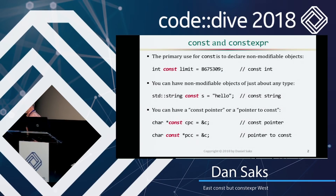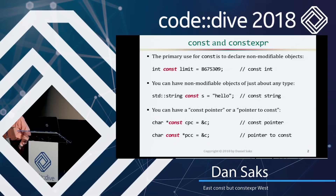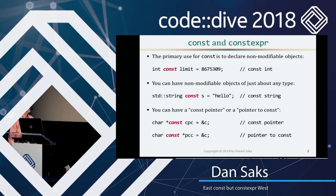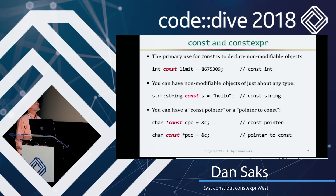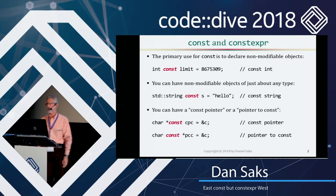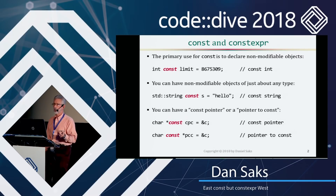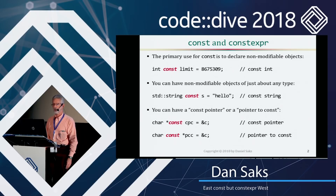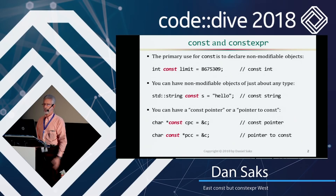I want to talk about const and constexpr in C++. The const qualifier's primary use is so that you can declare non-modifiable objects. When you declare a limit to be a constant integer, it means you can't write to it. You can use this on just about any type — you can declare constant strings.